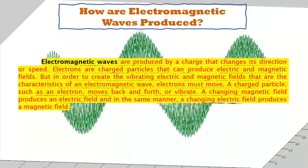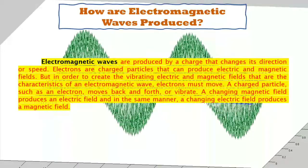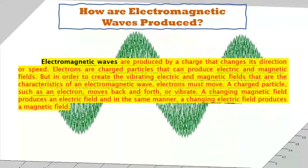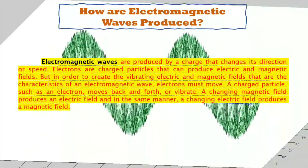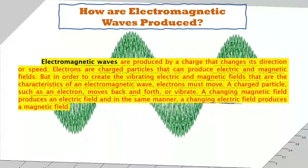Meaning to say, electromagnetic waves will be produced if there is a movement of electrons, and it creates the presence of the magnetic field and electric field.